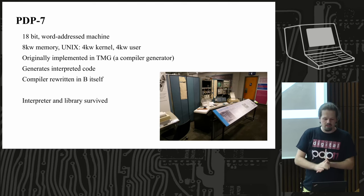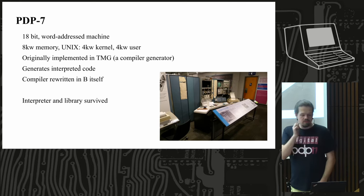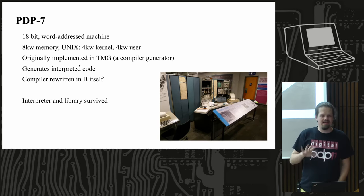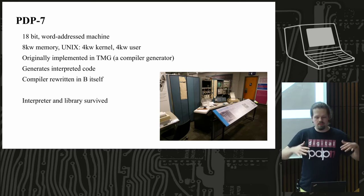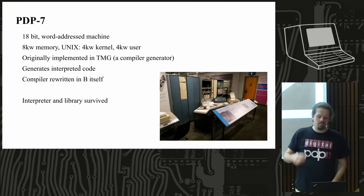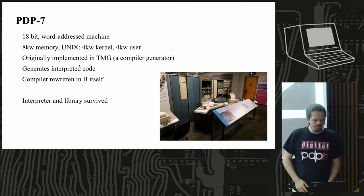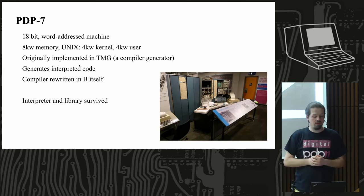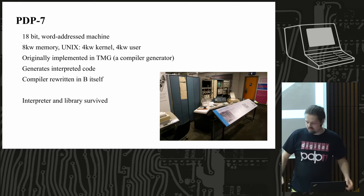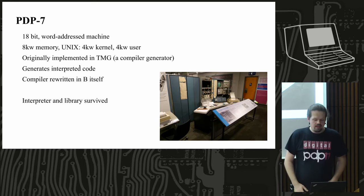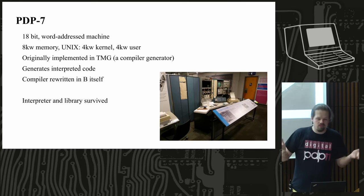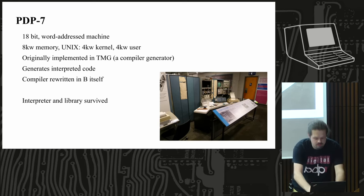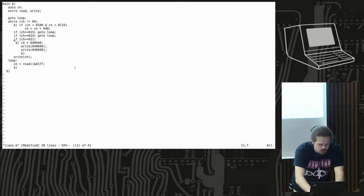The first version was implemented in TMG, which is a sort of yacc-like compiler generator — you describe the grammar and it builds a parser that outputs code as it parses the input. As I said, the output was interpreted code. Eventually the compiler was rewritten in B itself, which is always nice. Of this version, the interpreter library and the very short standard library have actually survived — they were found not too long ago.